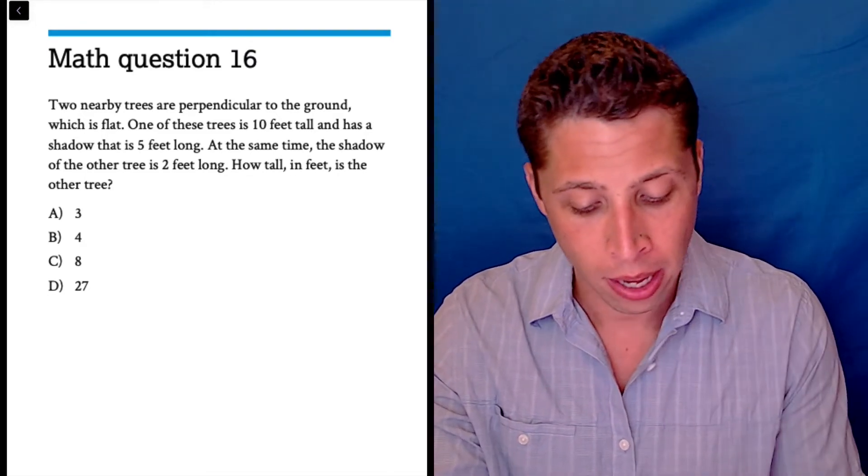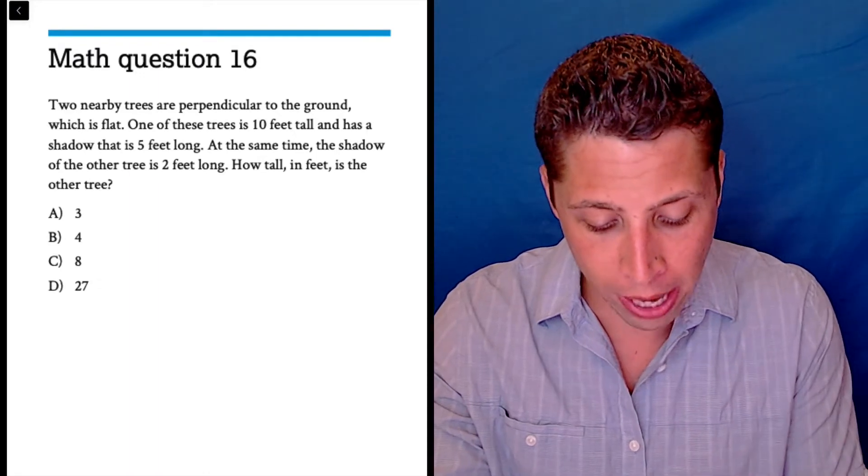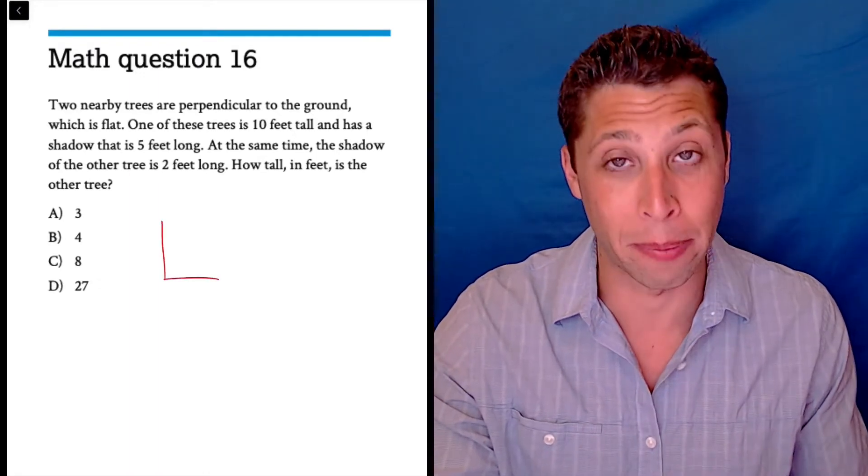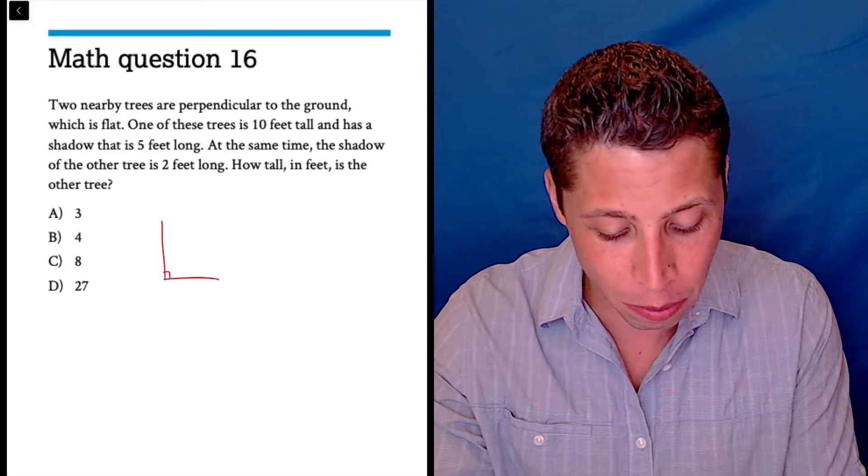Let's just draw what they're saying. Two nearby trees are perpendicular to the ground, so okay, great. Here's one example of that. We might be already able to see where we're going.